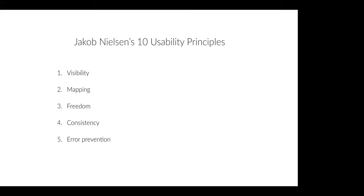Number six is recognition — minimize the cognitive load that people have, their need to remember what to do next. People should not have to remember information on their own, and you should make sure that you're providing clear instructions. Number seven is flexibility — make sure that different tasks and actions on your site are easy to perform for both beginners and novice users. Number eight is minimalism — provide only the most necessary information on a page in the most elegant way, removing friction.